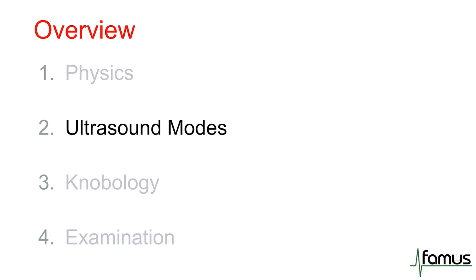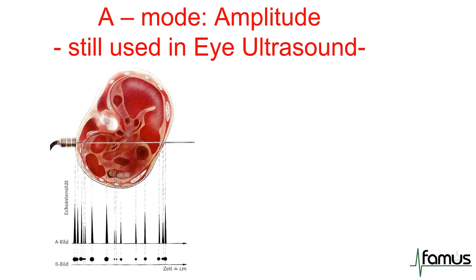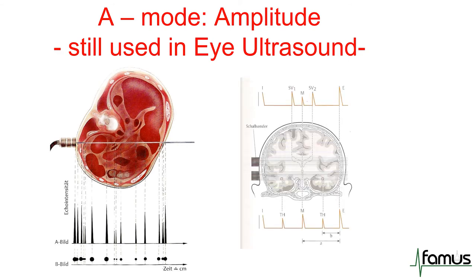Next, I want to talk about different ultrasound modes. The first is A mode, the oldest ultrasound mode, still used in eye ultrasound. An ultrasound signal is sent out, and wherever there is an impedance difference and an echo comes back, the amplitude is measured and shown over time. A mode was used in the past before widespread CT scanners to monitor midline shifts in traumatic brain injuries.